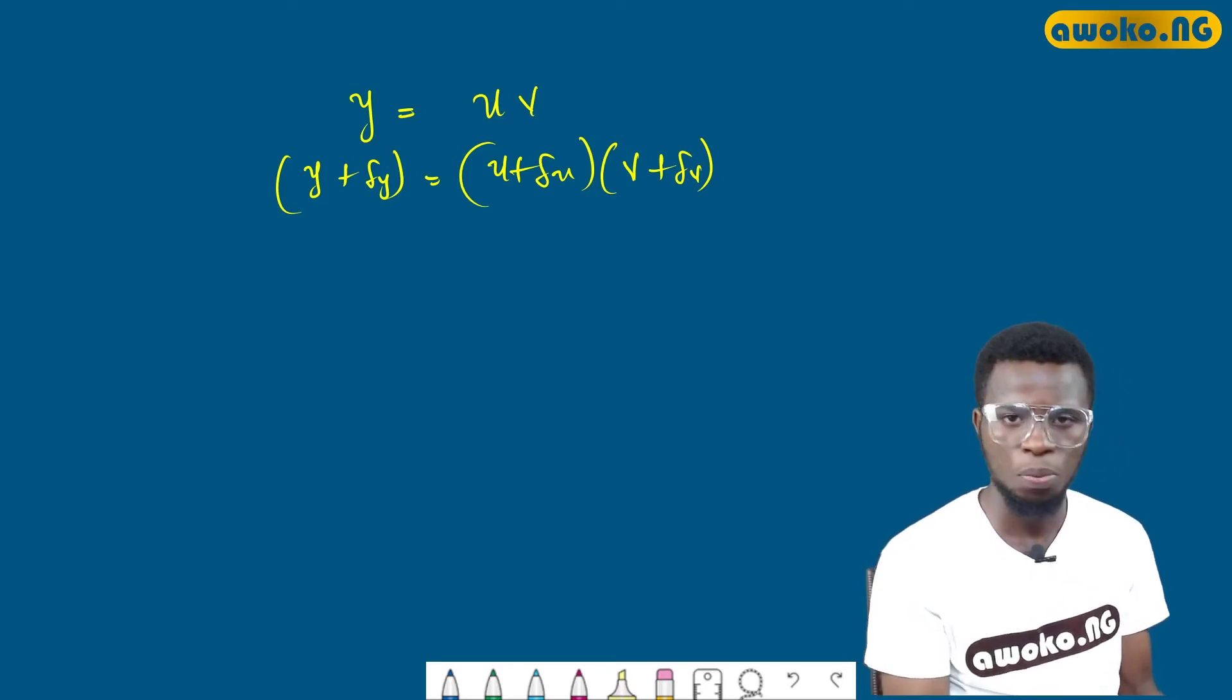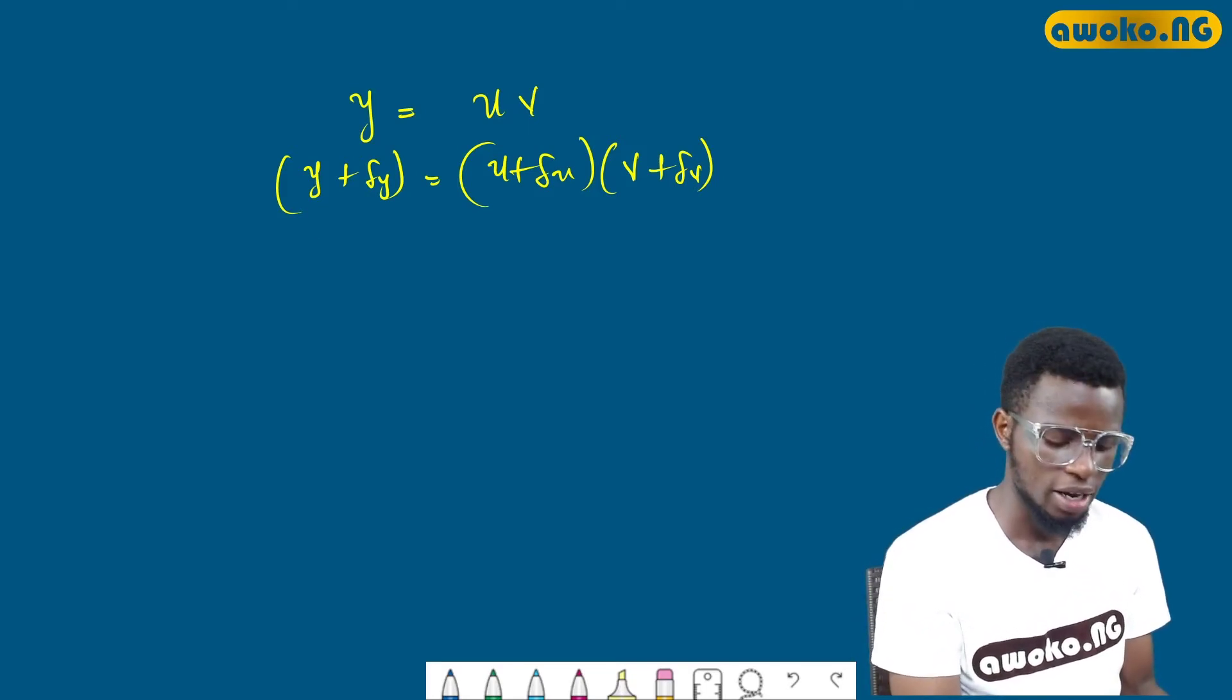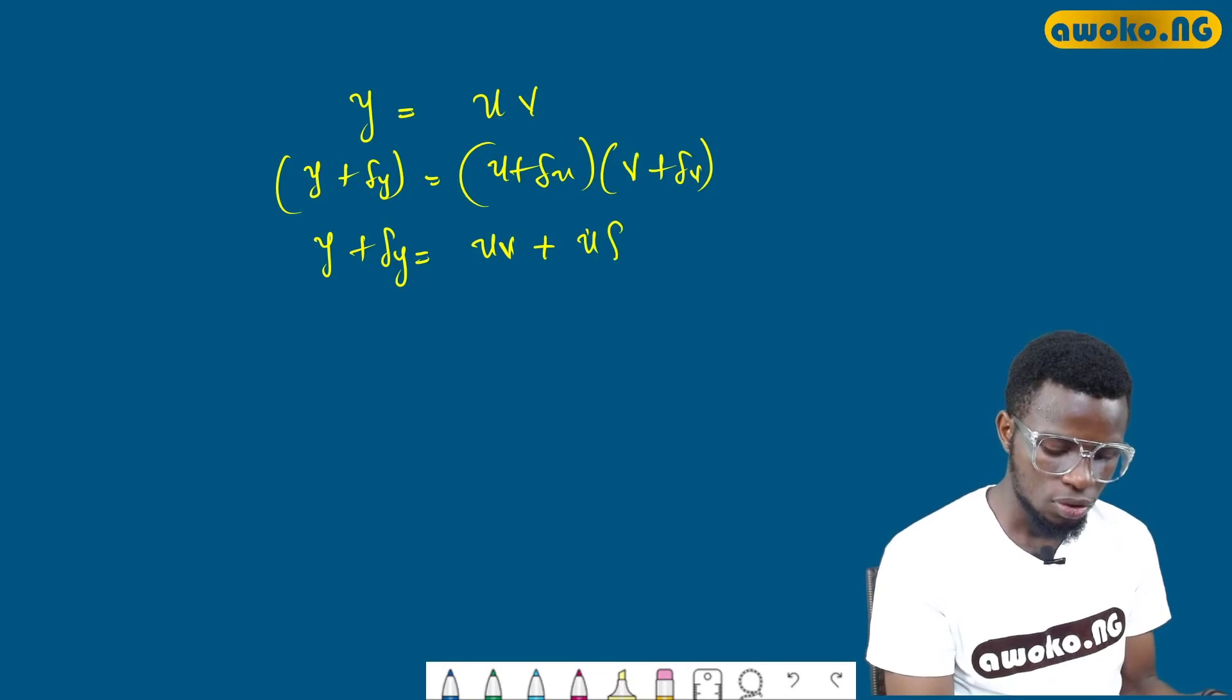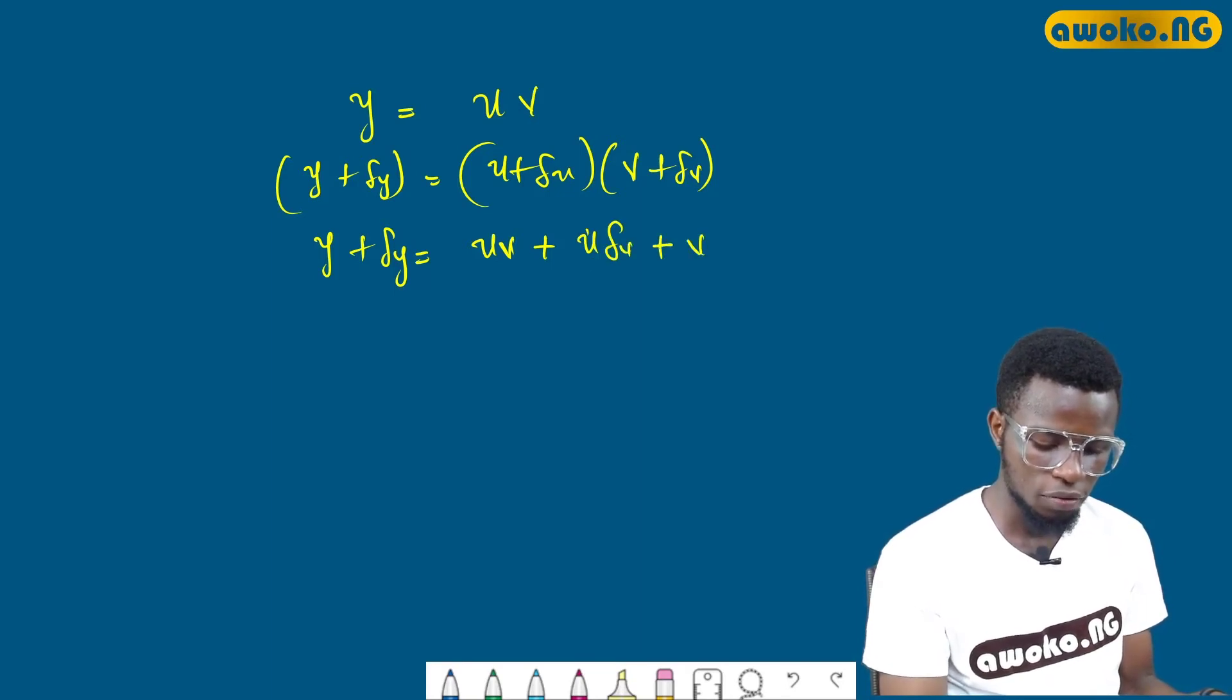The next thing is to open the bracket. If I open the bracket, I have y plus dy equals uv plus u(dv) plus v(du) plus du(dv).